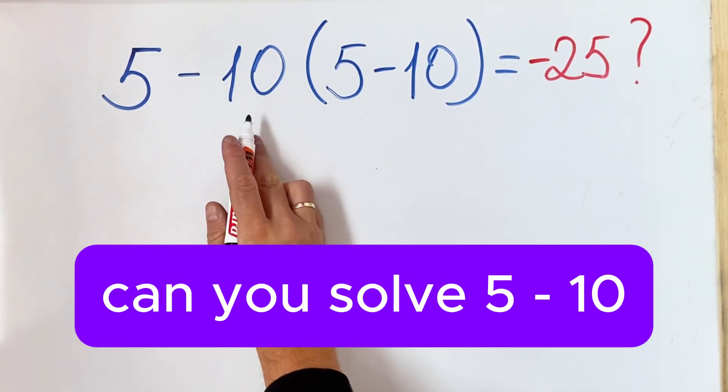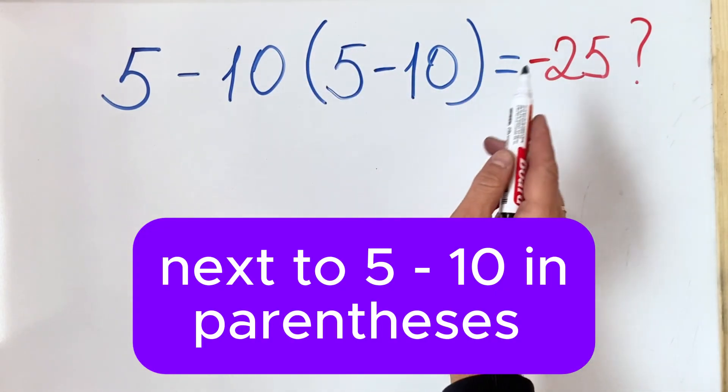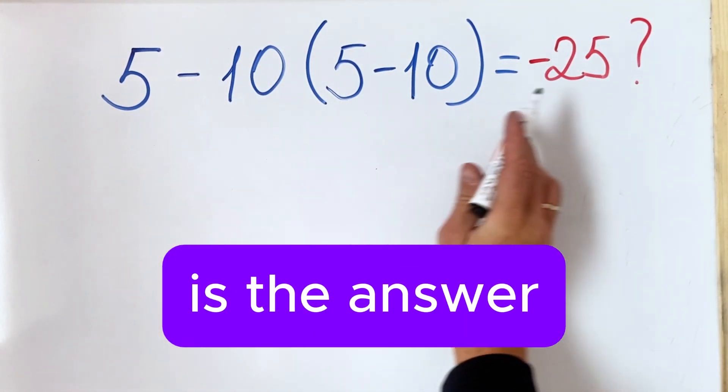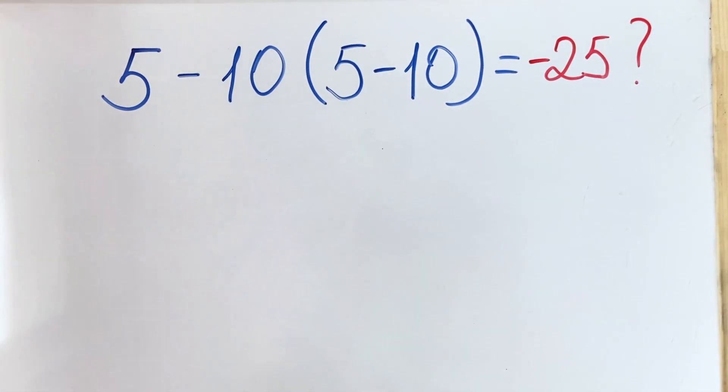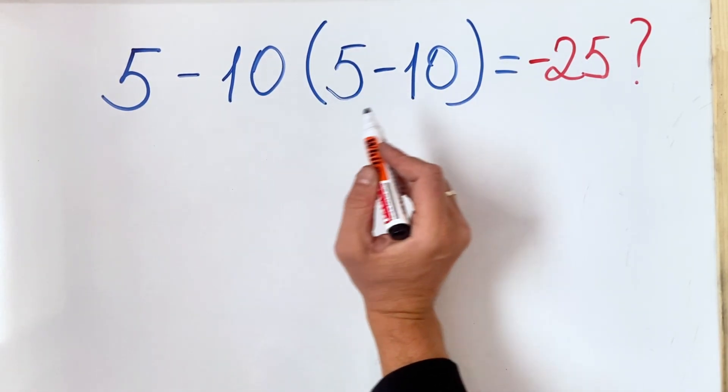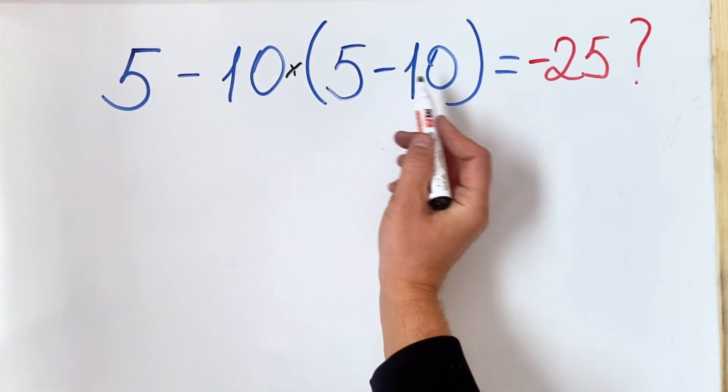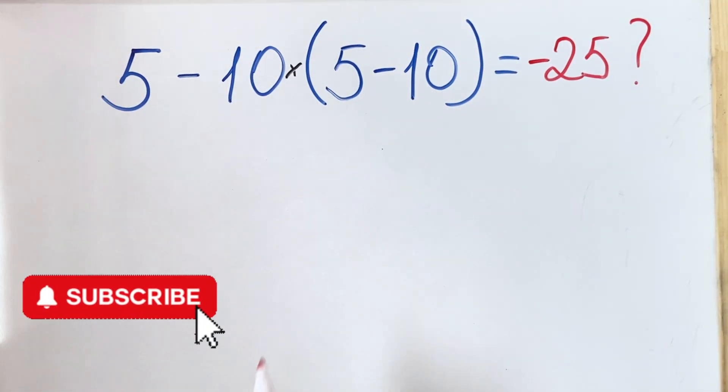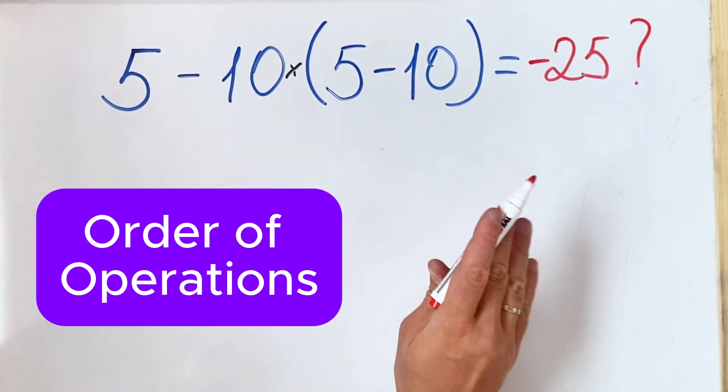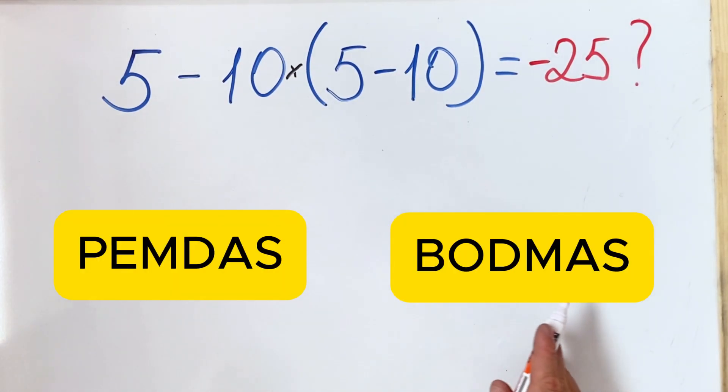Can you solve 5 minus 10 next to 5 minus 10 in parentheses? Is the answer minus 25? Here is the key: inside 10 next to 5 minus 10 in parentheses means 10 multiplied by 5 minus 10 in parentheses. Knowing this, what we need to do is follow the order of operation rules, which is PEMDAS.